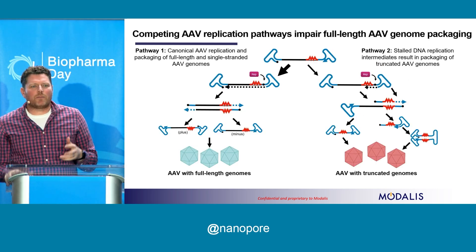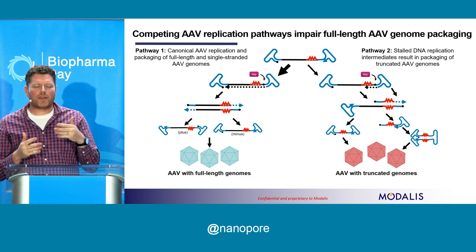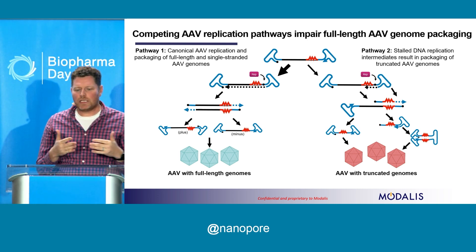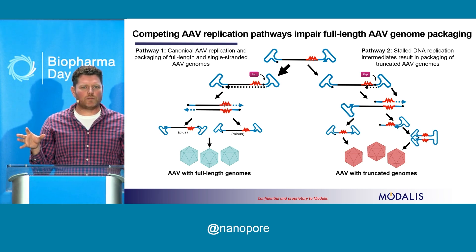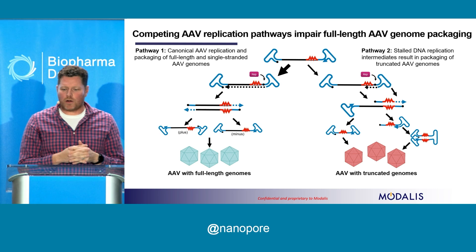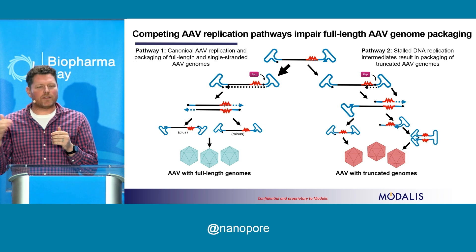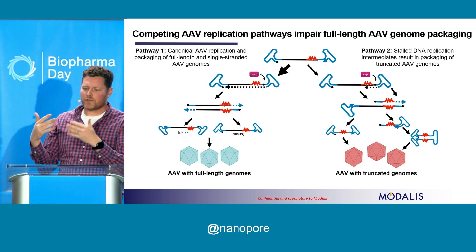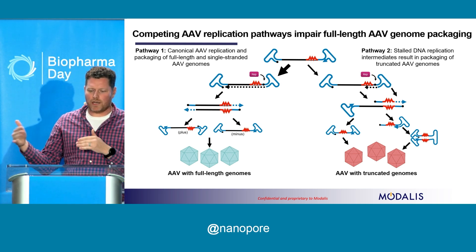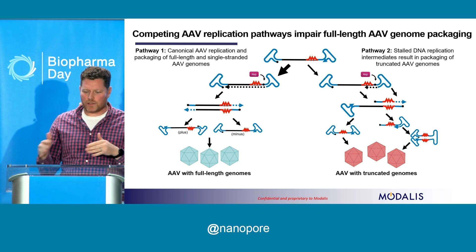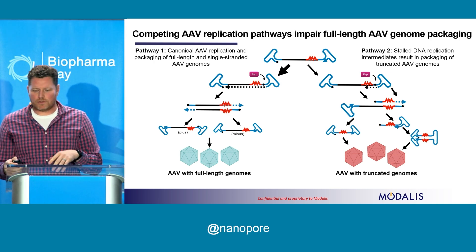When we saw this, we developed a model for future studies. We think we're seeing reduced yield because there are two competing pathways. In the canonical AAV replication pathway, the ITR is extended, producing plus and minus full-length genomes that are packaged into functional AAV particles. On the other hand, when you have problematic sequences, replication stalls at those sequences, resulting in truncated genomes. These truncated genomes can pick up an ITR from another AAV genome and are packaged into non-functional AAV. You end up with a mixed population of functional and non-functional AAV.